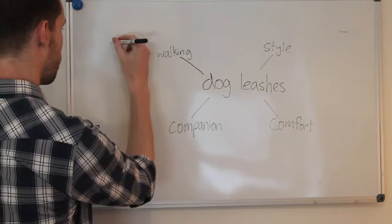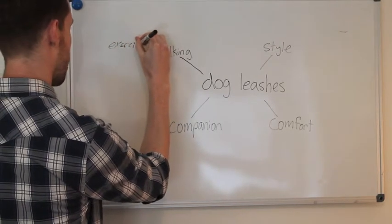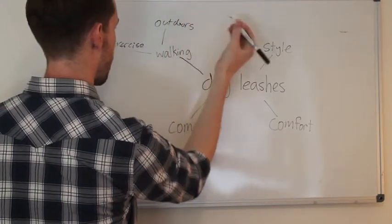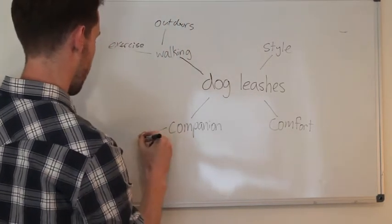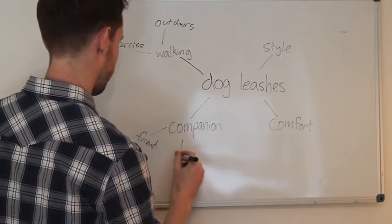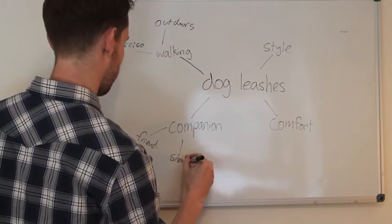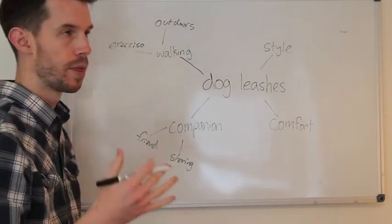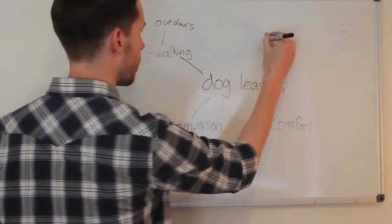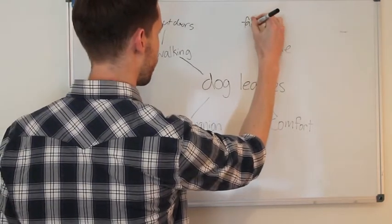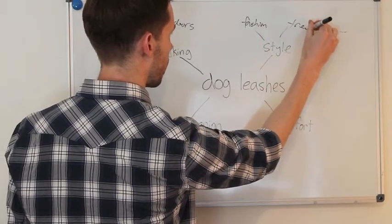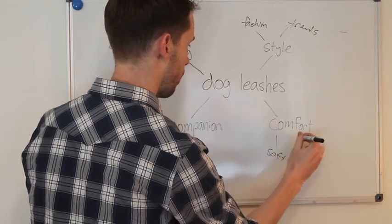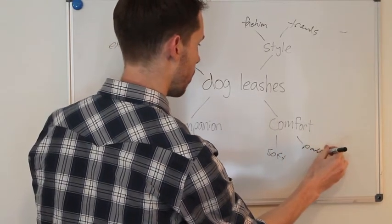I look at walking — what comes to mind? Exercise, outdoors, getting around. Companion: friend, sharing — whatever comes to mind, don't rule anything out. Don't really think about whether it's right or wrong, just keep moving with it. Style: fashion, trends. Comfort: maybe soft, padding. Just all things that come to mind.